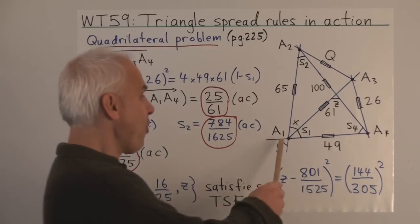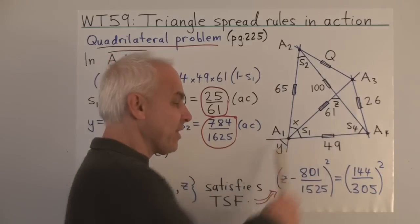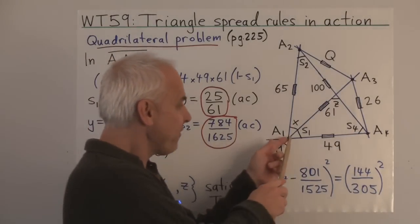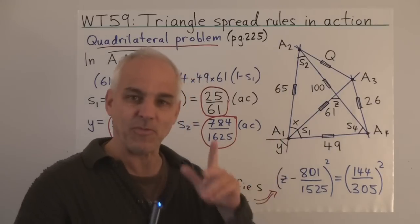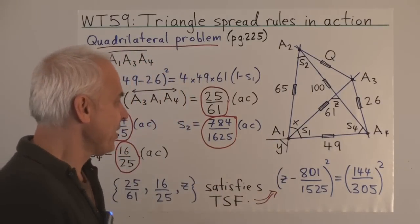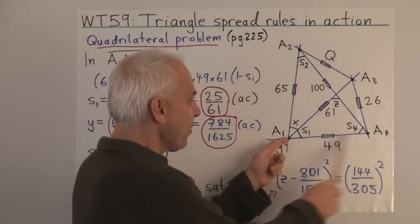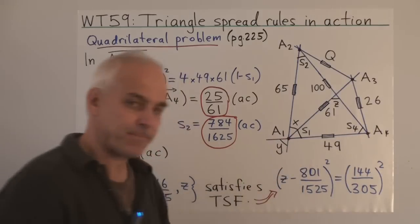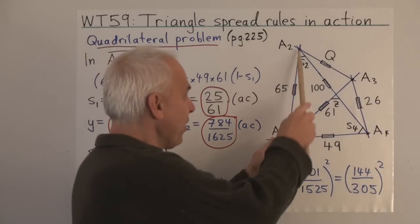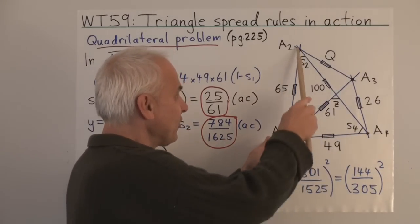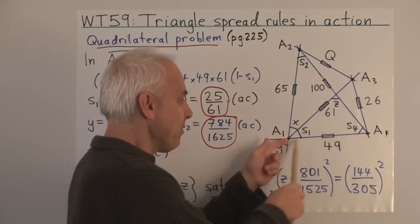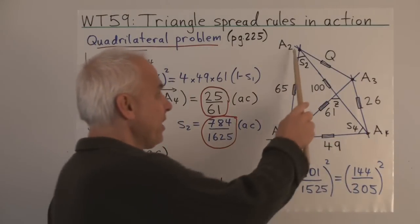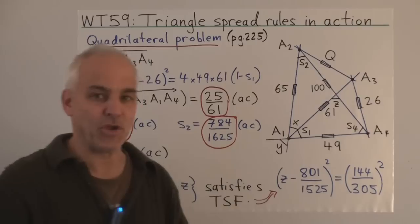It concerns a quadrilateral A1, A2, A3, A4. We know five of the six quadrances between these four points. In this triangle here, we know the quadrances 61, 26, and 49. And this triangle here, we also know completely: quadrances 65, 100, and also base 49. The problem is to determine this quadrance Q up here.